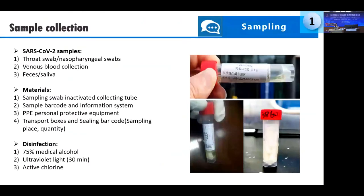We can use many sample types for SARS-CoV-2 detection. The first types are throat swabs and nasopharyngeal swabs, which can be used for nucleic acid and antigen testing. The second sample type is venous blood collection, which can be used to detect antibodies. We can also use feces and saliva, which can be used for nucleic acid and antigen detection.